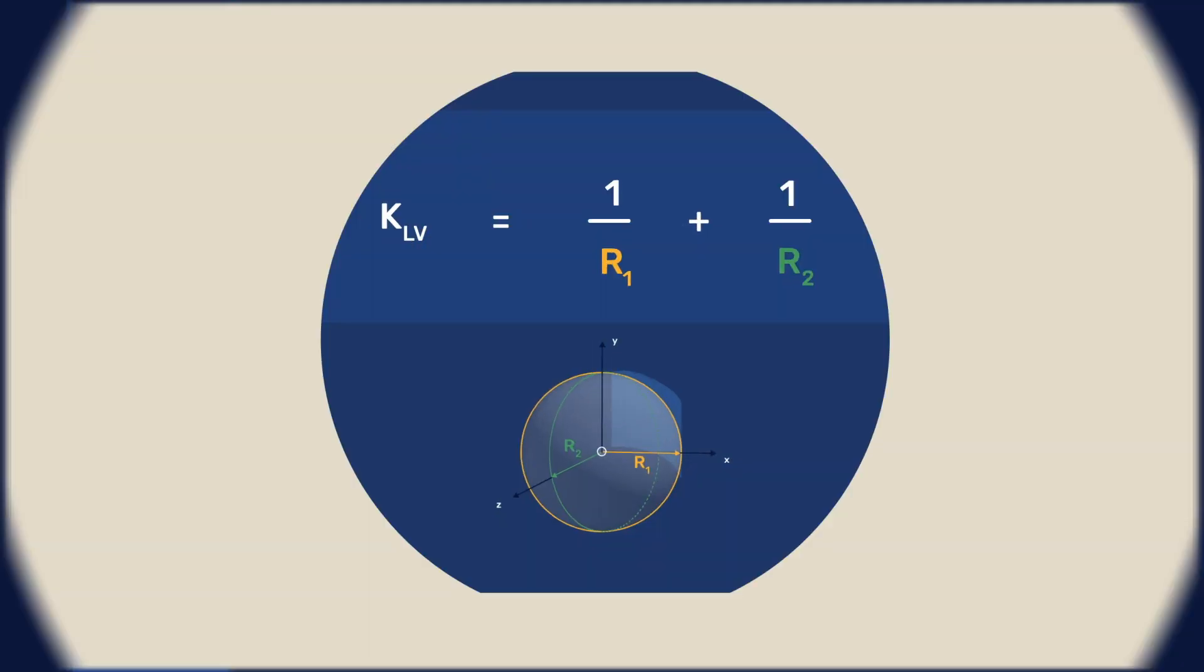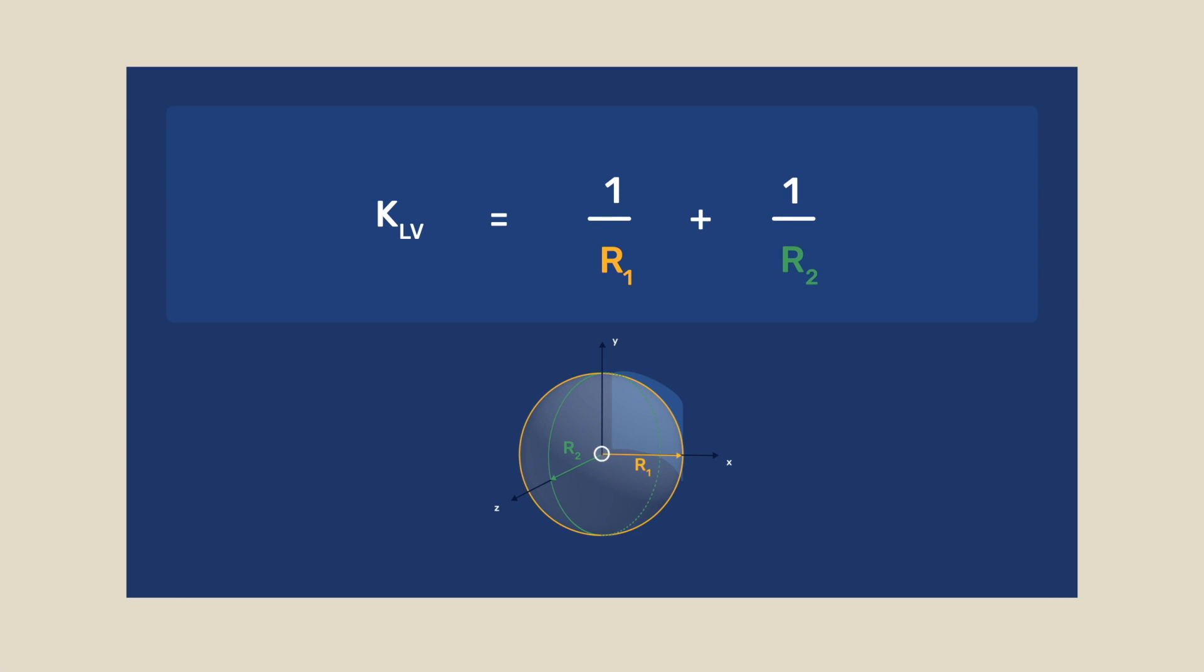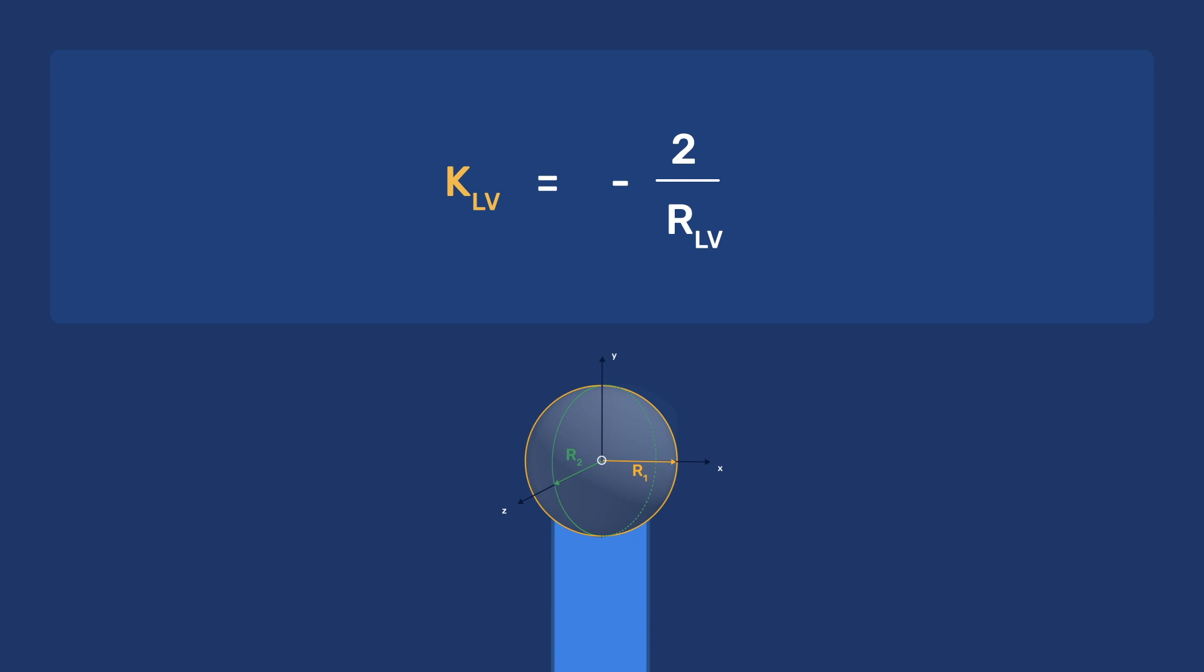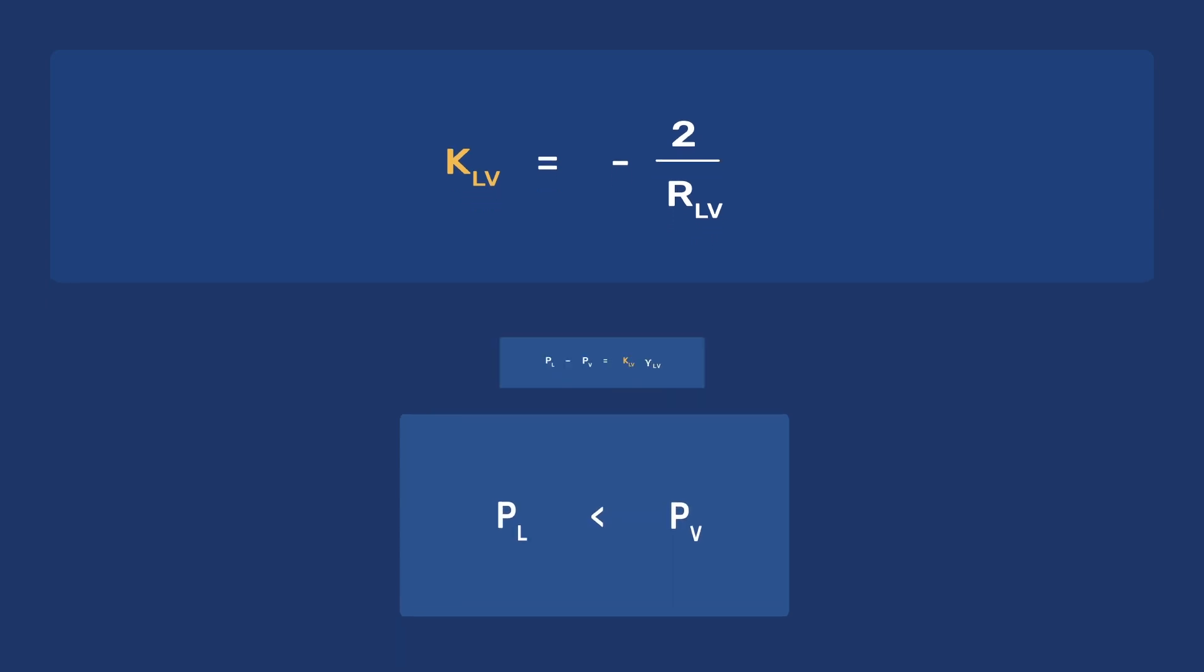As discussed in our capillary condensation video, in hydrophilic material, the curvature of a meniscus of condensed water in a cylindrical pore is K LV equals minus 2 over RLV, assuming a contact angle of 0. So, we find that the pressure in the liquid is lower than the pressure in the vapor.